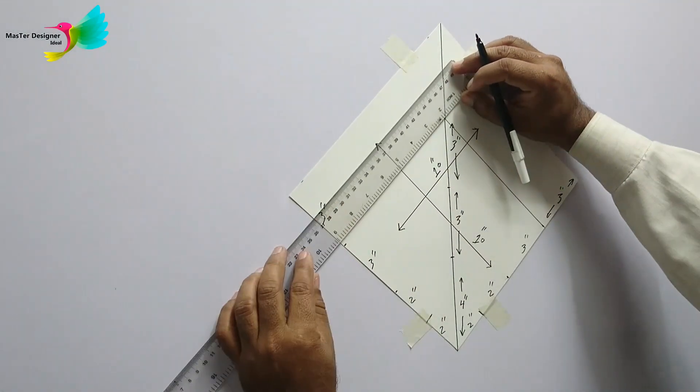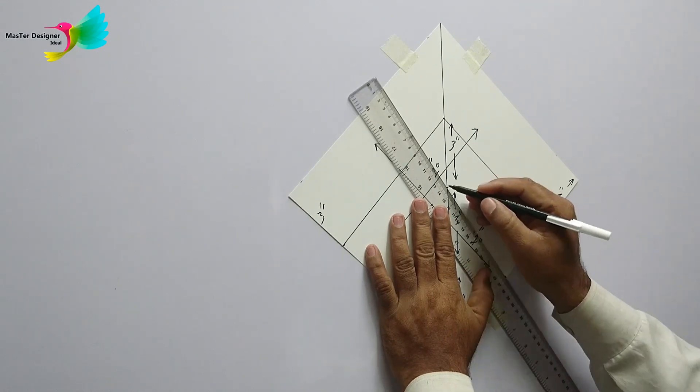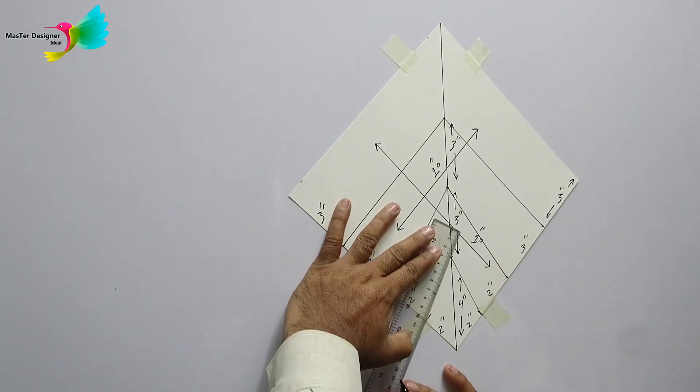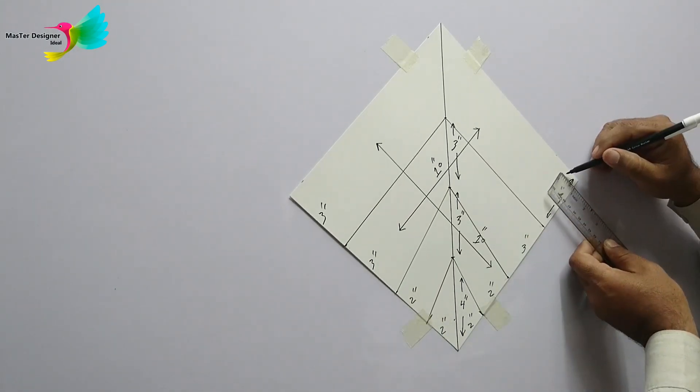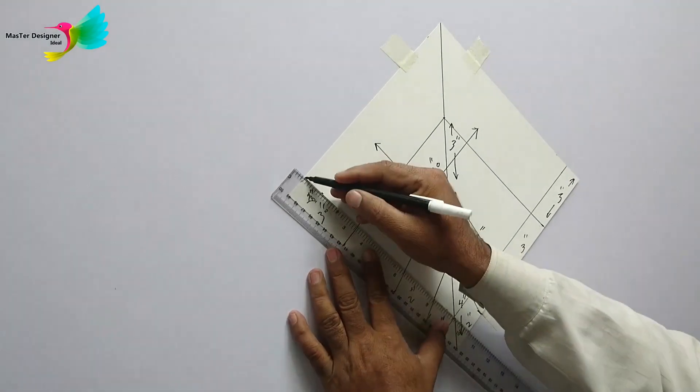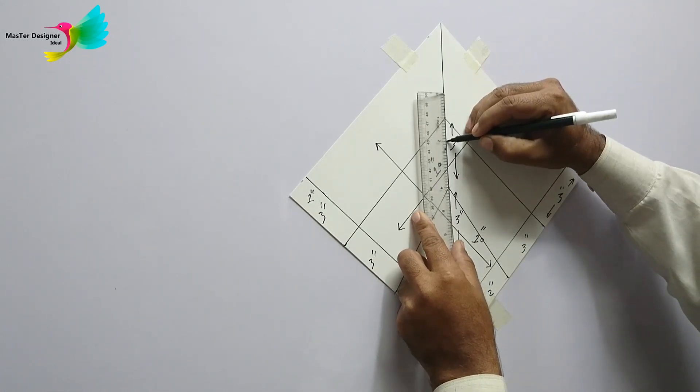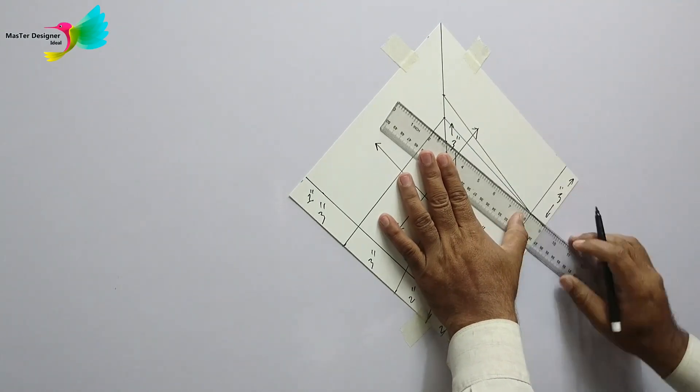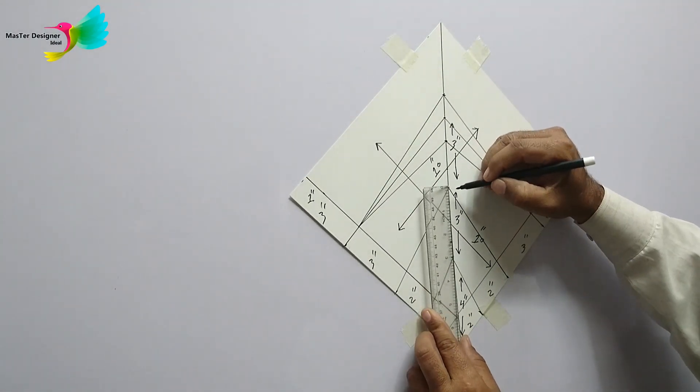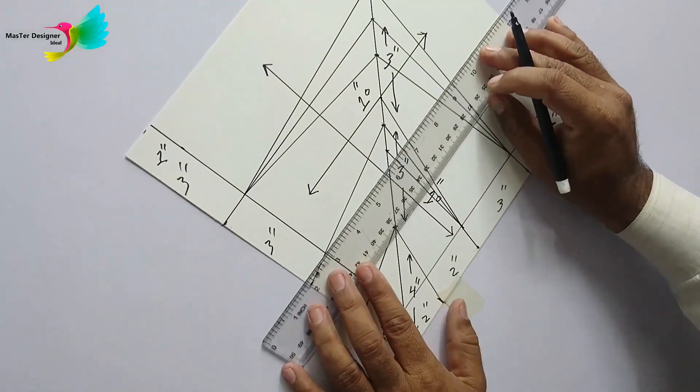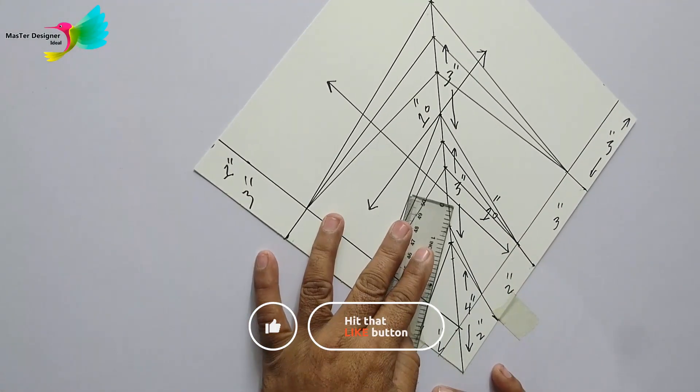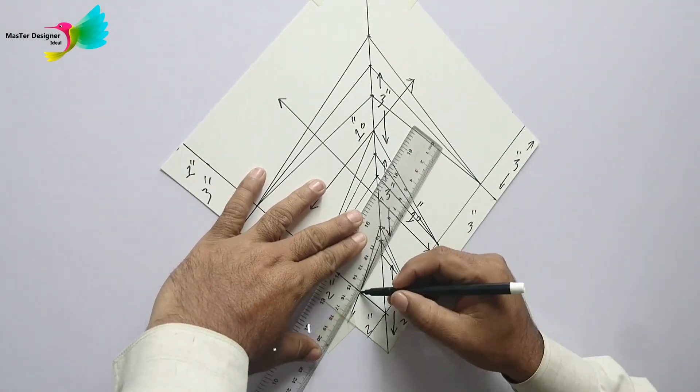Now join them with the middle points we made earlier. Repeat the same procedure on the same points. Cut the internals.